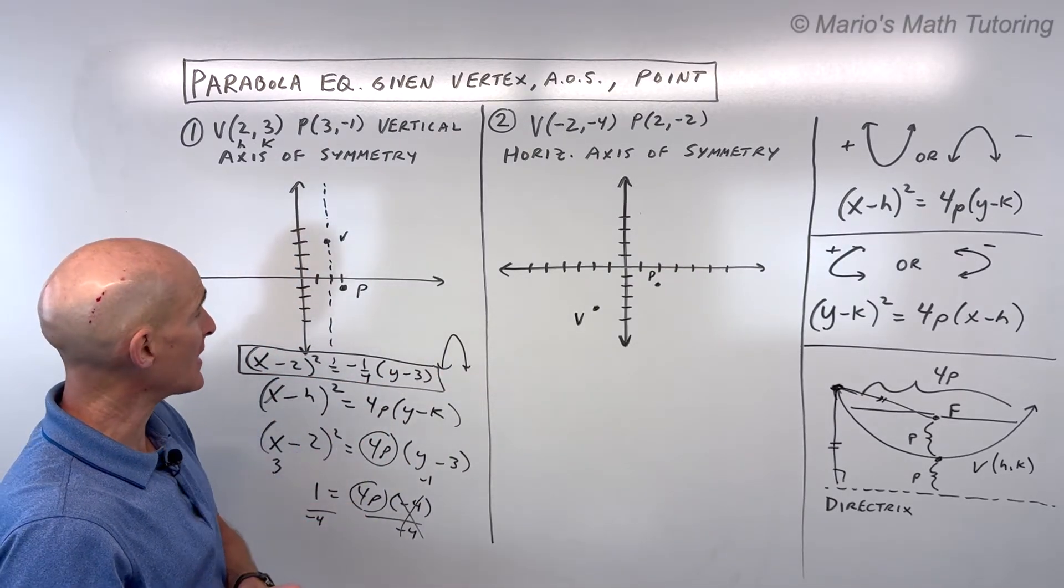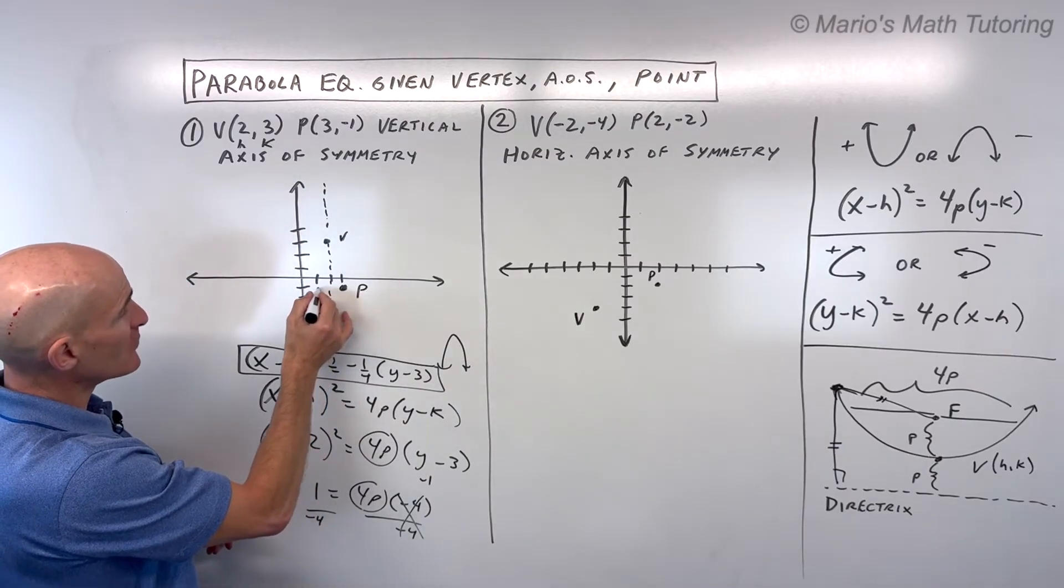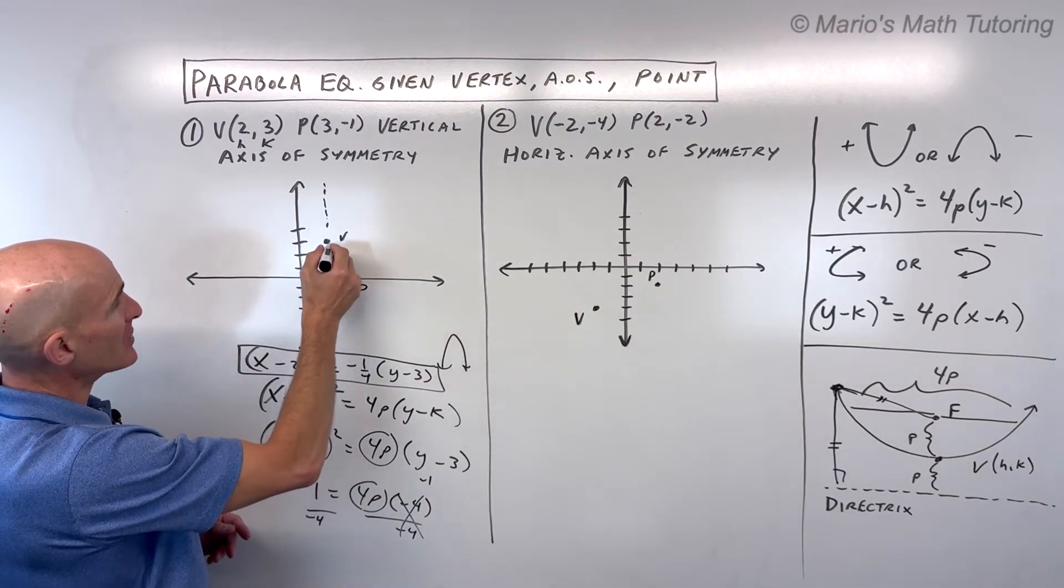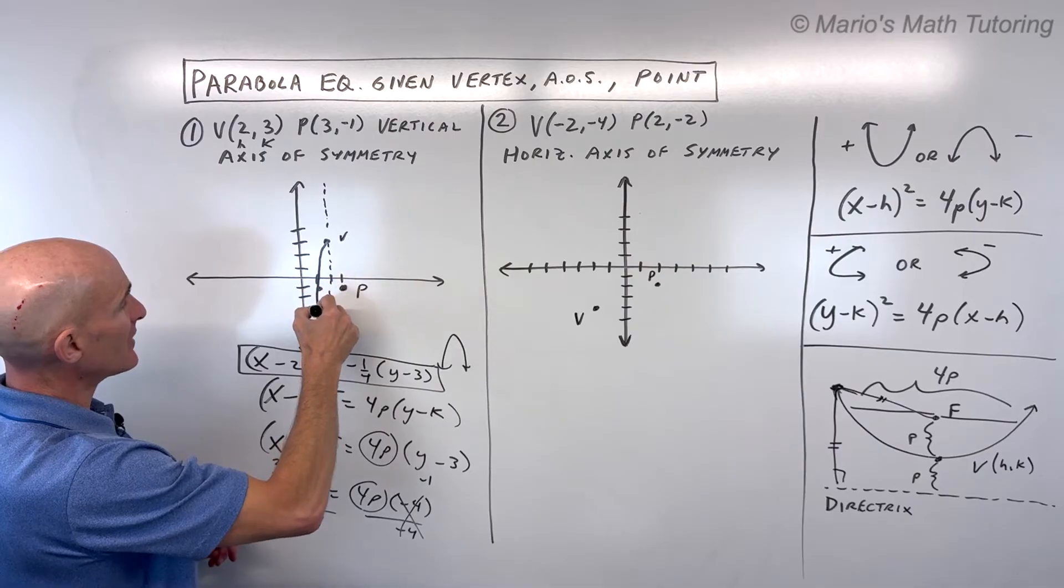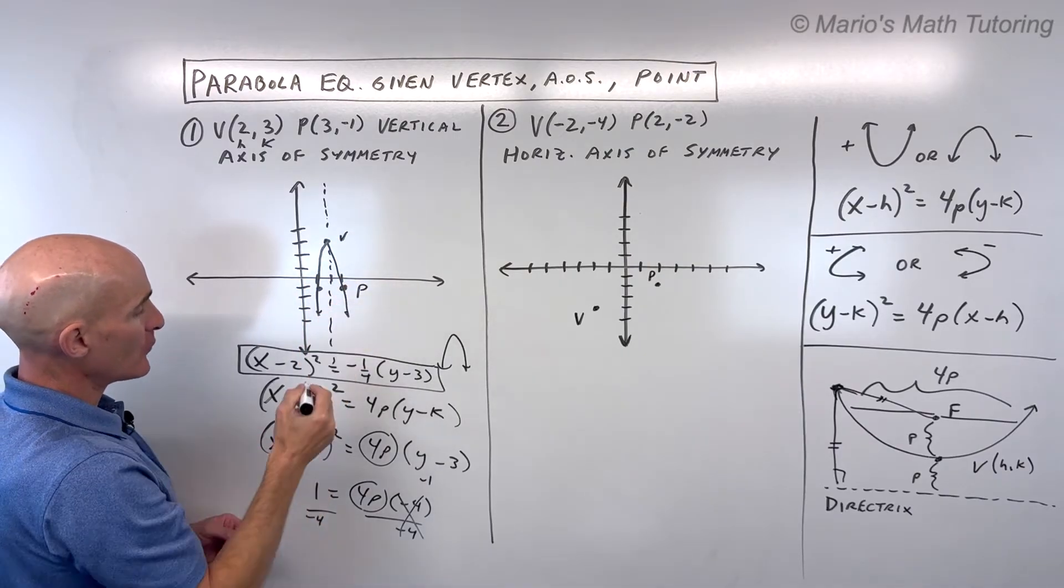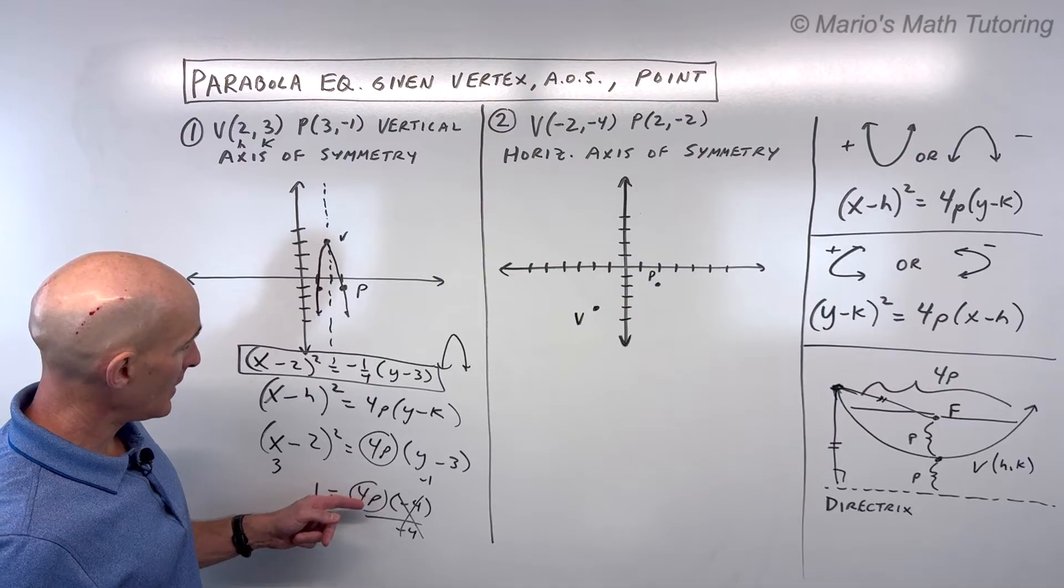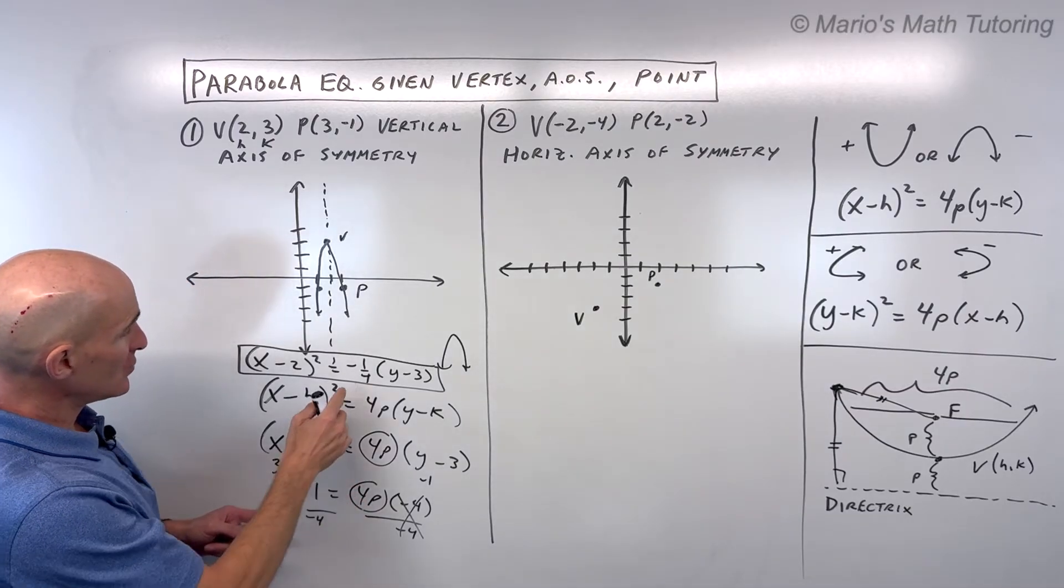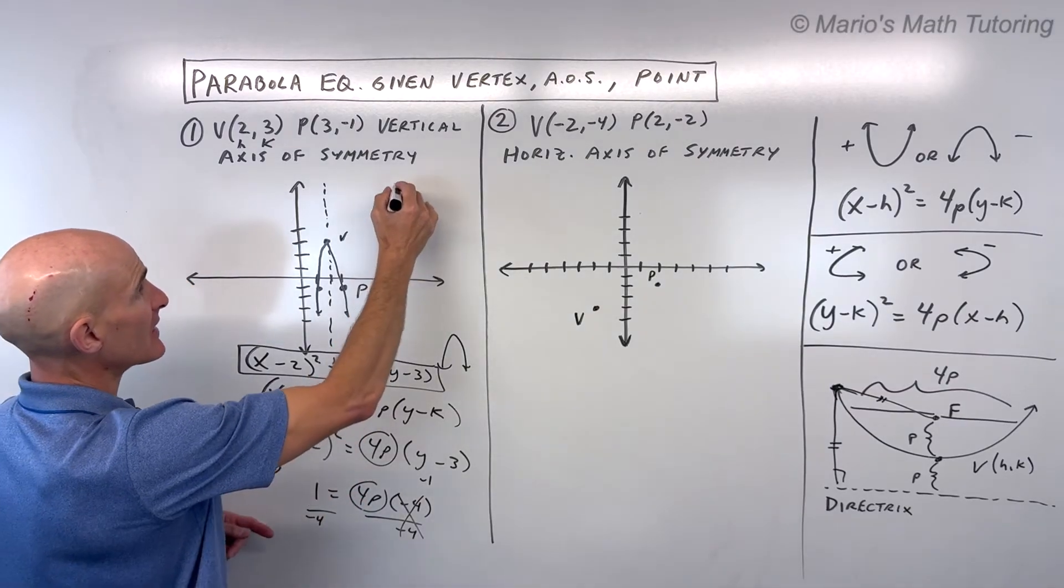Now if you want to get a good sketch, like I said, you could reflect this point over and you can see the graph is going to be looking something like this. If you want to find that focus, what you would do is you'd say, okay, 4P is equal to negative 1 fourth. Let's write that down, 4P equals negative 1 fourth.